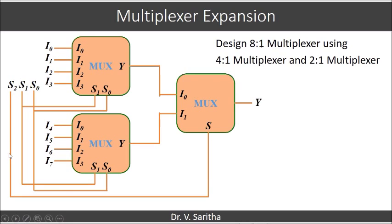When S2 equals 1, then depending upon the values of S1 and S0, we will have the values of i4, i5, i6, or i7 into our final output y.